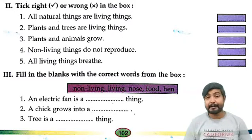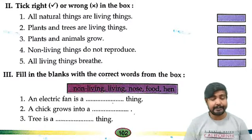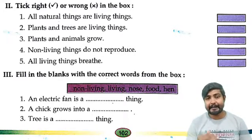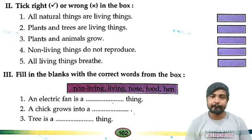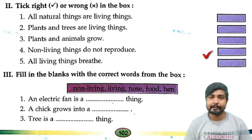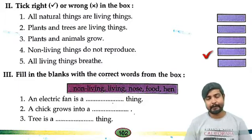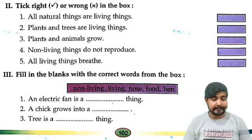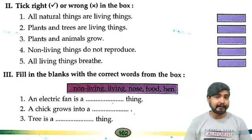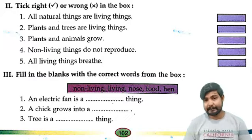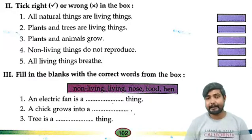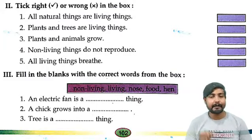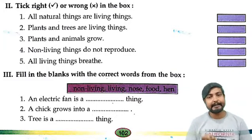Number 3: Non-living things do not reproduce — this is true, tick. Non-living things kabhi bhi reproduce nahi kar sakta. Number 5: All living things breathe — this is also true, tick. Jitne bhi saare living things hain woh breathe kar sakte hain.